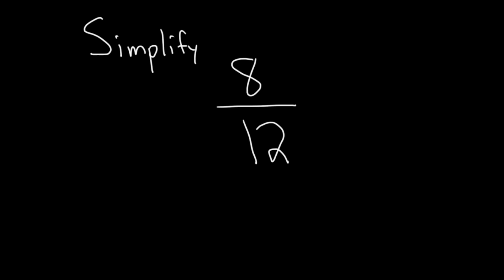We have to simplify this fraction 8 over 12, so let's go ahead and go through it. You have to start thinking about what numbers divide into both of these. 1 would work, but that's boring — it's not going to help you. 2 goes into 8 and it goes into 12, so you could just start dividing by 2, and that would take you down the correct path.